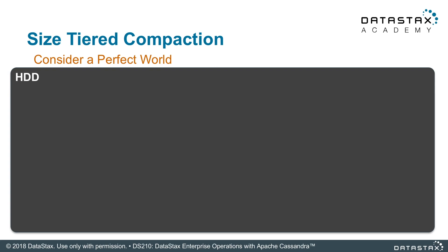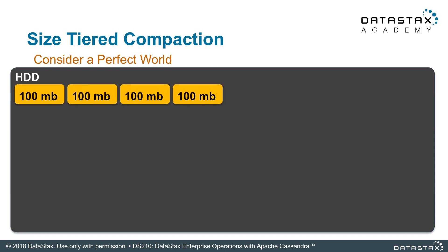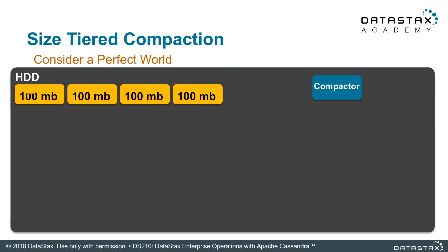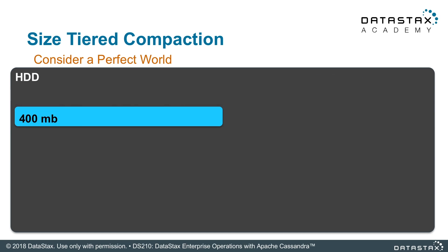We have some great animation to show you exactly how it works. Here's a perfect world example — perfect world meaning none of this data overlapped. When you're writing out data, let's say these 100 meg SSTables flush to disk. The compactor looks at these files, does a comparison, and tries to compact those smaller files into a larger file. The data is written in, written out, and now you have a new file. The old files can go away.